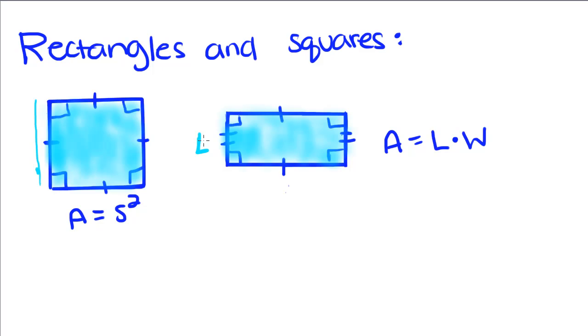The area of a rectangle is the length times the width. Since you find area by multiplying, and multiplication is commutative, it doesn't really matter what you call the length and what you call the width, as long as you get this one and this one.